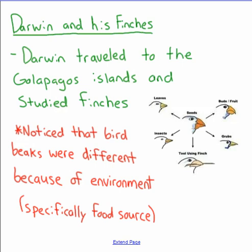Charles Darwin is considered the father of evolution. Darwin traveled to the Galapagos Islands and he studied finches. One thing he noticed was that each island had its own species of finch, and their beaks were different depending on the island that they were on, which was mostly dependent on the food source.